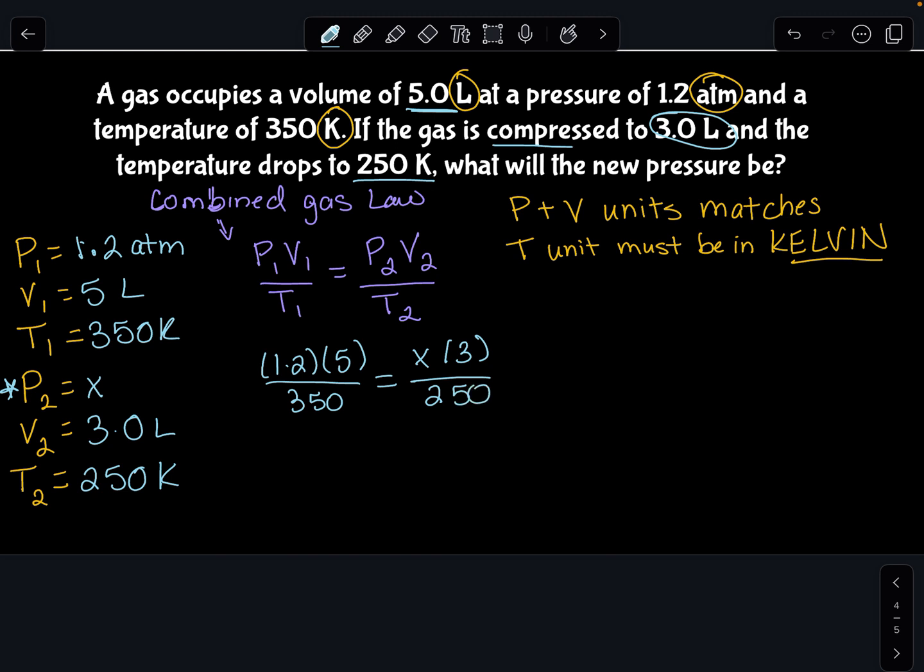All right, I know that's a lot of numbers, so we're going to try to simplify it first, so there's less numbers to deal with. So on the left-hand side, I'm going to do 1.2 times 5, and that's going to give me 6 over 350. And then I'm going to multiply X times 3, that's 3X, put it over 250. So that's step one, simplify your terms.